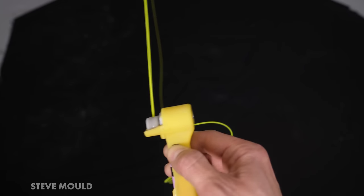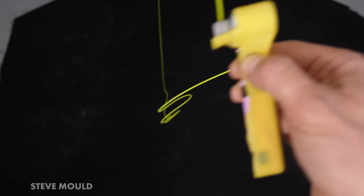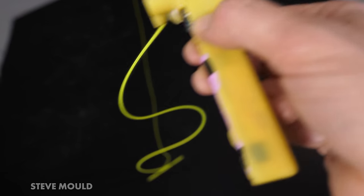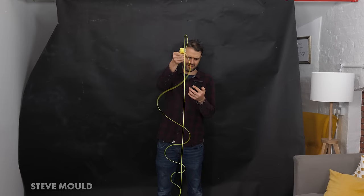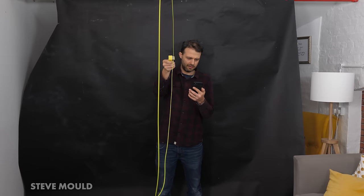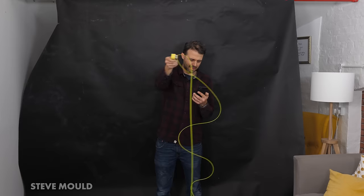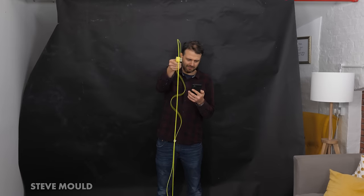But because the string is coming towards me at high speed, the apparent speed of the wave is much slower. Specifically, in this case, the wave speed is a little faster than the string speed, so it wins and we see it propagate away from the handle. On the top part of the string, the wave is shooting out at high speed and the string is shooting away at high speed, so you don't even see it.